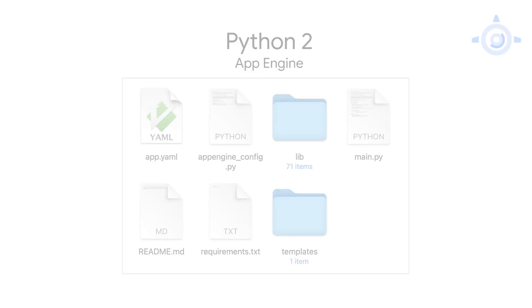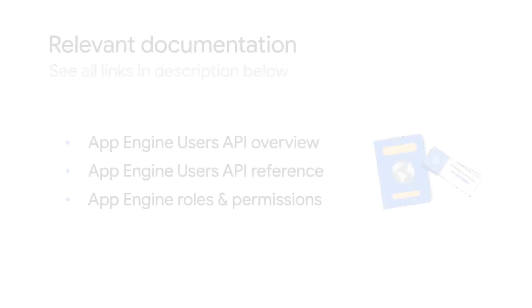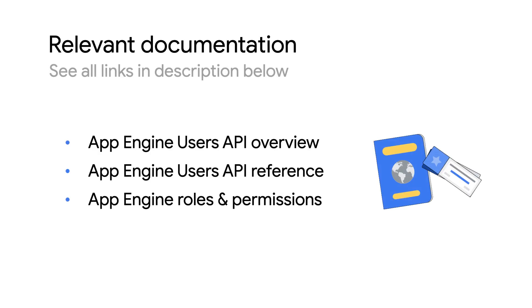So that was a rundown of our modification to the module 1 app, resulting in the module 20 app integrated with the App Engine user service. Time to wrap up. Thanks for the tutorial, Wes. Can you point us to the Users API docs so our viewers can learn more about it? Sure, Martin. Below, I've got all kinds of links to the Users API overview page, the API reference docs, and all of the IAM roles — which includes the four roles I mentioned earlier that gives users admin access.